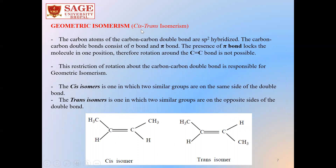Then comes geometric isomerism, that is cis-trans isomerism. The carbon atoms of the carbon-carbon double bond are sp2 hybridized. The carbon-carbon double bond consists of a sigma bond and a pi bond. The presence of this pi bond locks the molecule in one position; therefore, rotation around the carbon-carbon double bond is not possible. This restriction of rotation about the carbon-carbon double bond is responsible for geometrical isomerism. Cis-isomers are those in which two similar groups are on the same side of the double bond — here we can see both CH3 groups are on the same side. Trans-isomers are those in which two similar groups are on the opposite side of the double bond — here both methyl groups are on opposite sides, so this isomer is known as the trans-isomer.